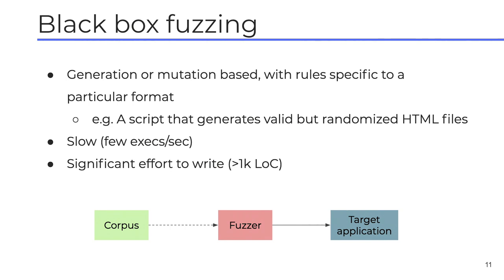The most basic form of fuzzing is known as black box fuzzing. A black box fuzzer is just a program that generates or mutates files of a particular format — for example, an HTML parser fuzzer would output random but valid HTML files, which are then fed one by one to a target application in hopes of triggering a crash. These can generate test cases completely from scratch or mutate existing test cases from a corpus. Well-written black box fuzzers can be very effective, but they tend to be slow, require considerable effort to write, and are mostly written by experienced security engineers, making the process difficult to scale.